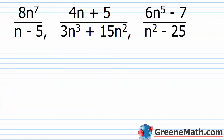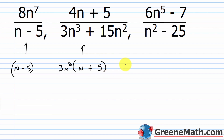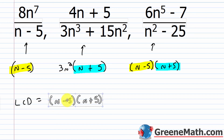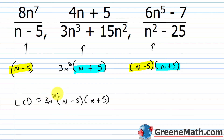Last example — three denominators: n − 5 (can't be factored further), 3n³ + 15n² (pull out 3n² to get n + 5), and n² − 25 (difference of two squares: factors as (n − 5)(n + 5)). For the LCD: n − 5 appears once in the first and once in the third — put in one factor. n + 5 appears once in the second and once in the third — put in one factor. Then 3n² from the second denominator goes in front. So the LCD is 3n²(n − 5)(n + 5).